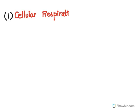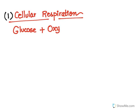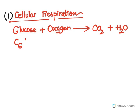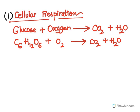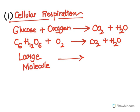For cellular respiration, basically what happens is glucose and oxygen react to give us carbon dioxide and water. The chemical reaction is C6H12O6 combining with O2 to give us CO2 and water. Here basically a large molecule — glucose — is giving us smaller molecules of carbon dioxide and water.